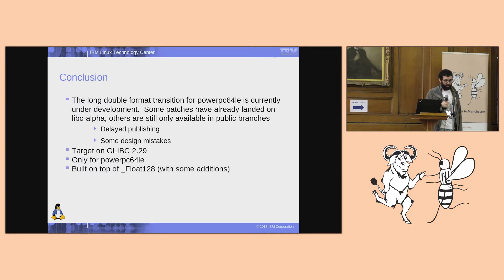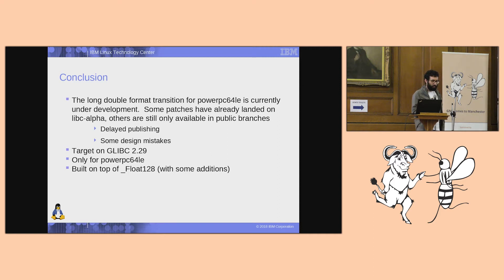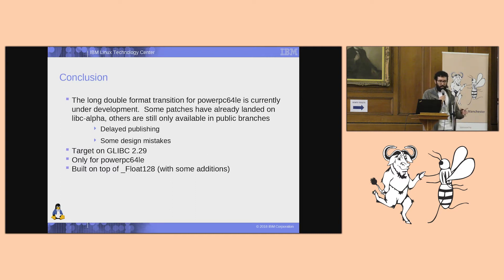There was a question about Power8: it does have the Float128 format — you would pass it in vector registers exactly the same as on hardware that does support Float128 — but it does not have any of the hardware operations. In the compiler there are emulation routines, but you don't want that overhead in libc for everything because it's a lot slower than real instructions. For libc, Float128 and IEEE128 on Power8 is supported the same way as Float128 — via emulation.